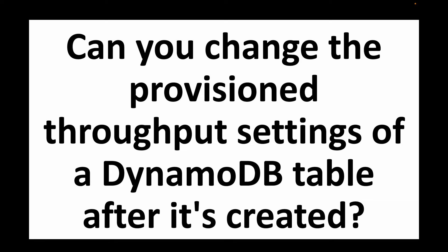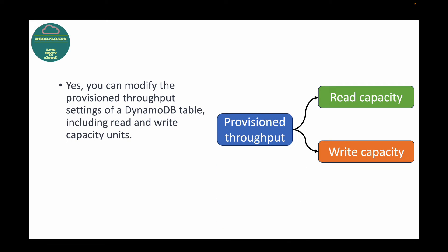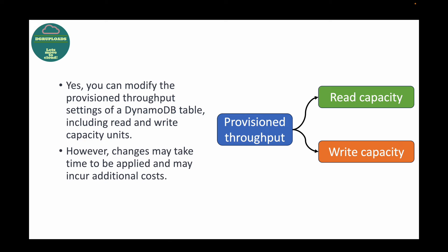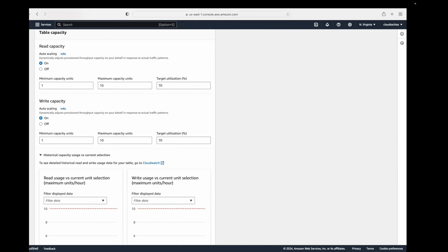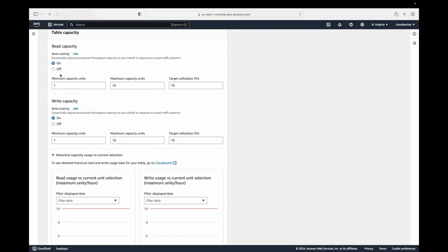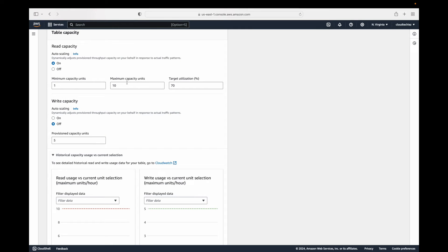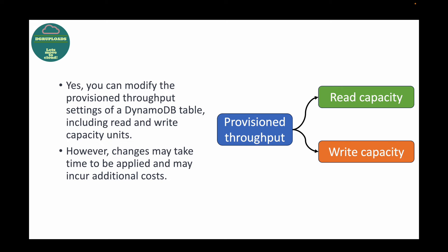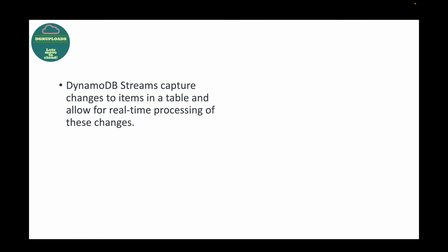The next question is: can you change the provisioned throughput settings of a DynamoDB table after it's created? Yes, you can modify the read and write capacity units. However, keep in mind it takes time to apply these changes and may cost additional money. You can choose auto-scaling, where you define minimum and maximum capacity and DynamoDB scales automatically, or manually define provisioned capacity. The main challenge is the time required to apply those changes.